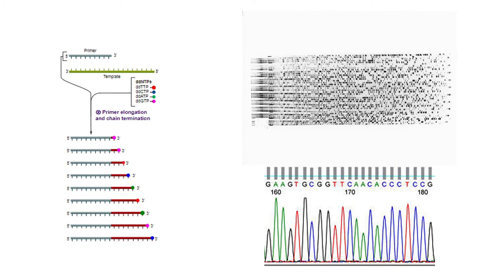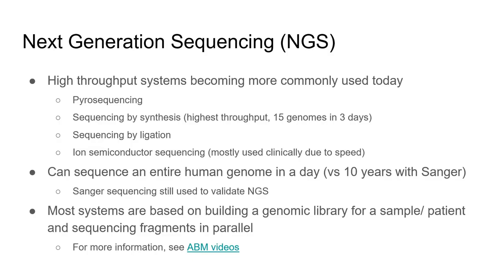This process is slow, taking almost 10 years to sequence the first human genome. Next-generation sequencing does the same thing on a much larger scale, drastically speeding up the process by sequencing fragments of the DNA in parallel. With the various technologies developed in NGS, entire genomes can be sequenced in days instead of years. We haven't completely moved on from Sanger sequencing though — it is still considered the gold standard, and NGS platforms are validated against the Sanger method.